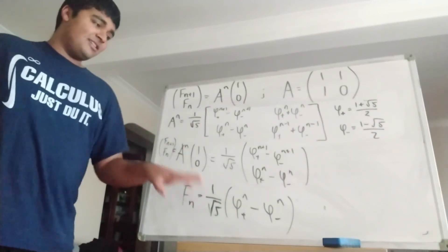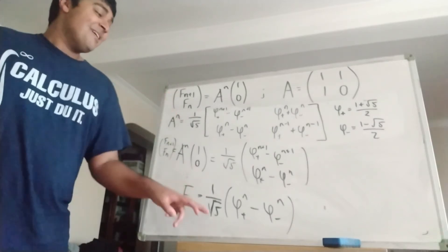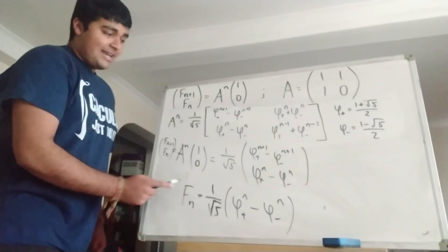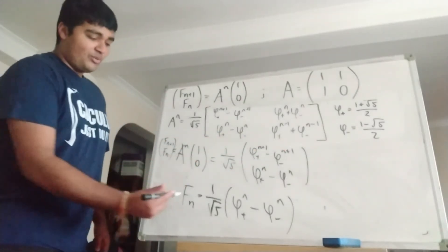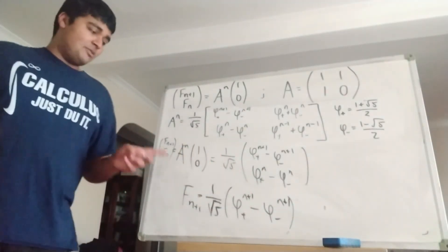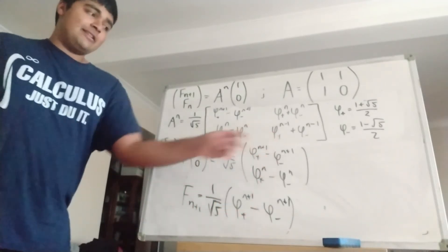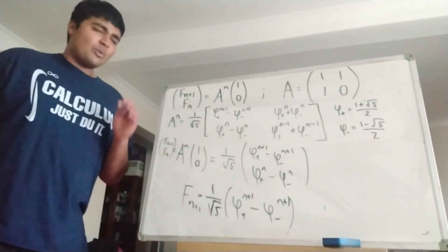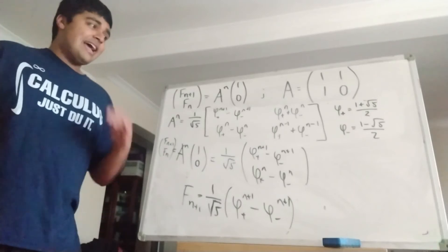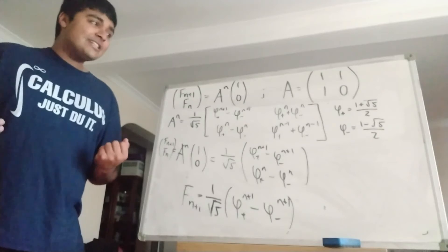So A to the n times 1, 0 equals 1 over root 5 times that column vector. But remember, A to the n times 1, 0 is just Fn plus 1, Fn. So from this we can read off the nth Fibonacci number: Fn equals 1 over root 5 times 5-plus to the n minus 5-minus to the n. So the nth Fibonacci number has an explicit formula in terms of 1 plus root 5 over 2 and 1 minus root 5 over 2 and their powers in n. We can check this agrees with the top row by plugging in n plus 1, and we get 1 over root 5 times 5-plus to the n plus 1 minus 5-minus to the n plus 1 — exactly the same. So we probably haven't made a mistake.